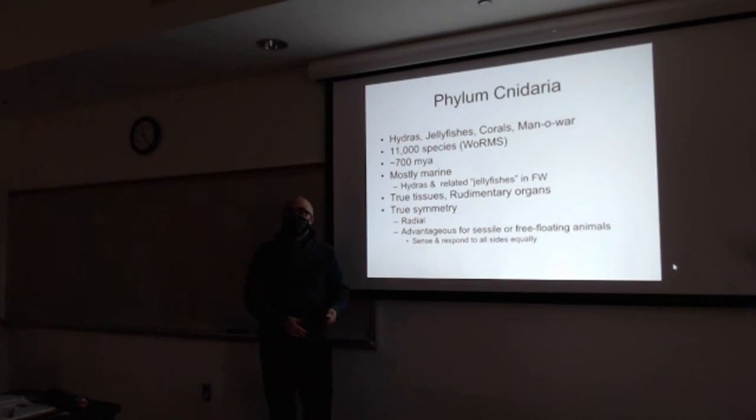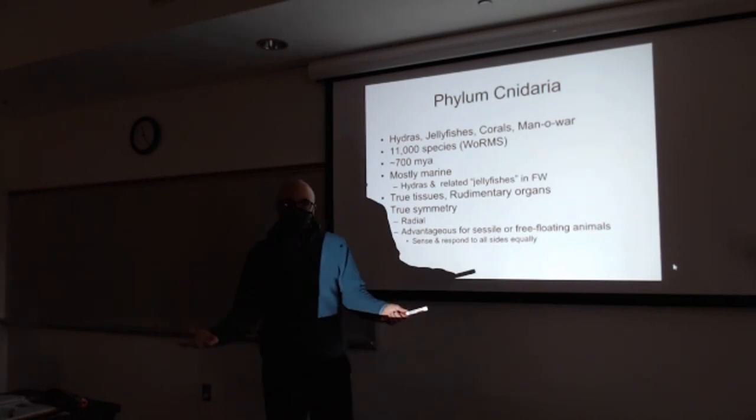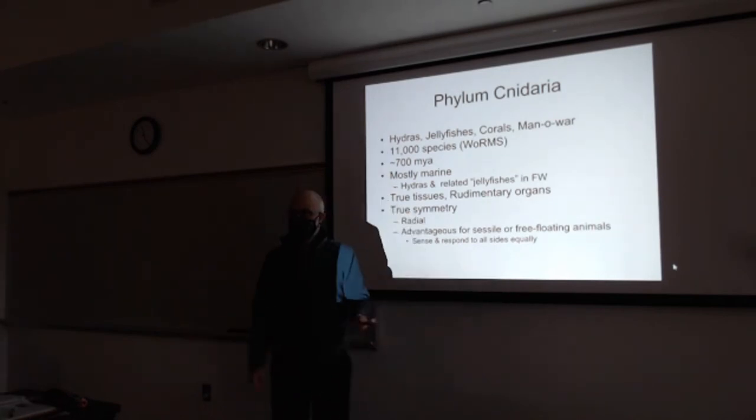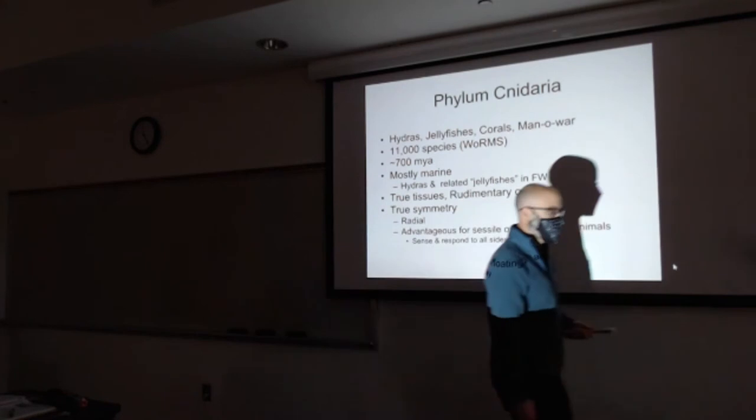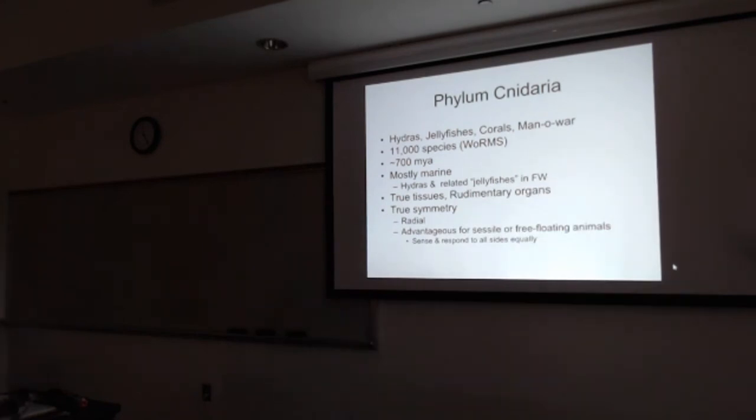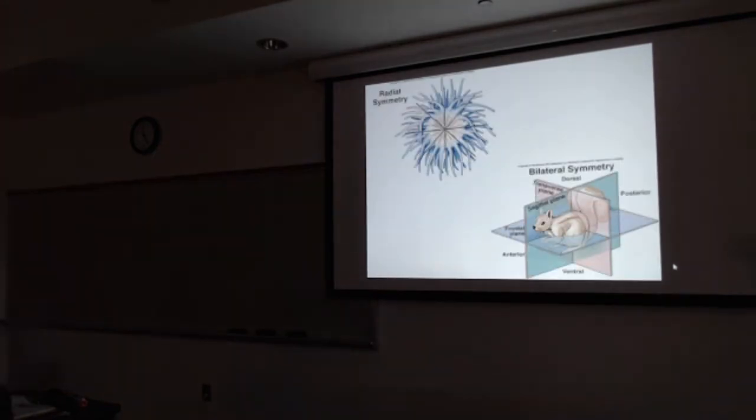But if you are attached, where's your food coming from? Behind you, in front of you, inside of you, right? If you're floating around and the winds of the ocean turn you around, which direction you're going? You respond in all directions equally if you are a radially symmetrical animal. So try to think about why would this be adaptive? Why is that a good design?